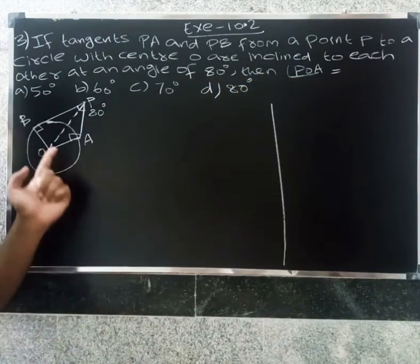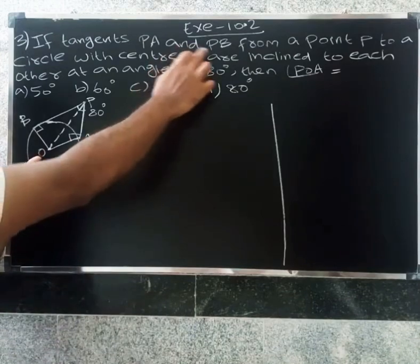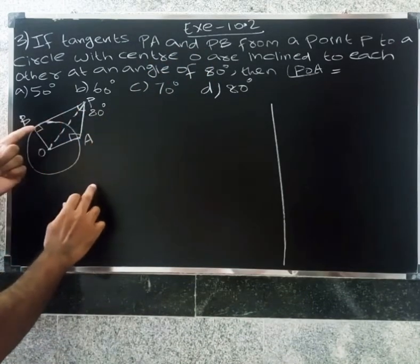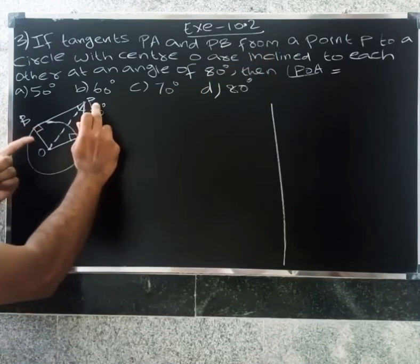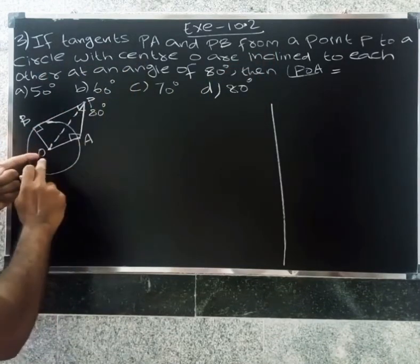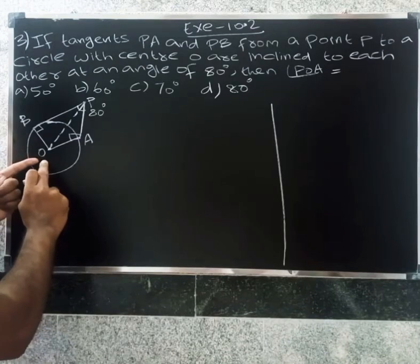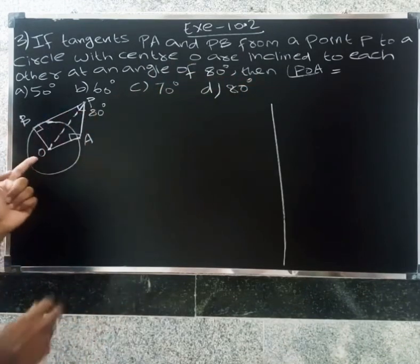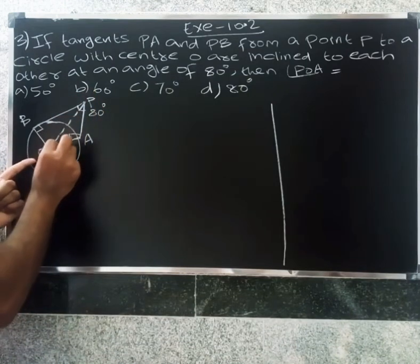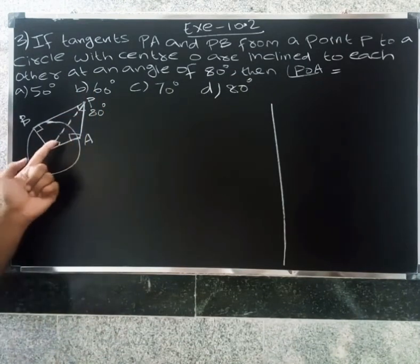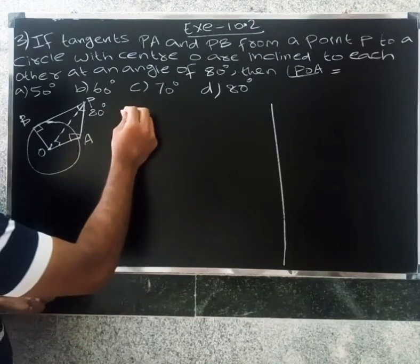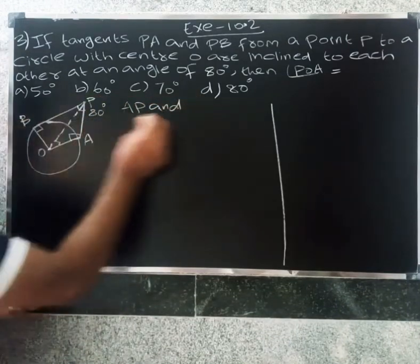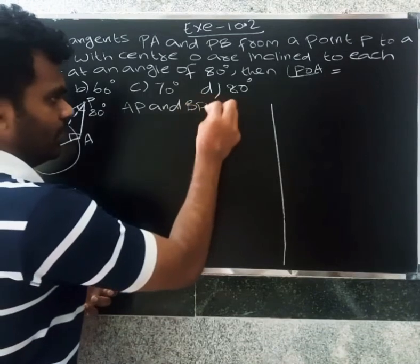So first, look at this diagram. Tangent PA and PB — here are the tangents PA and PB from point P to a circle with center O. AP and BP are tangents.